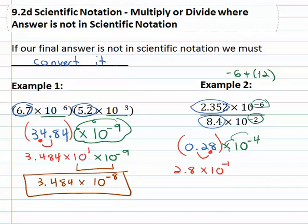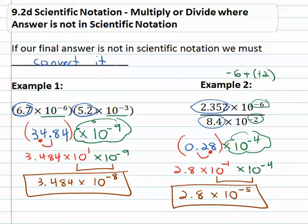And we don't forget that we also have this times ten to the negative four hanging out. So to finish it off, we'll use our exponent properties on those tens, giving us 2.8 times ten to the, adding the exponents, negative one and negative four is negative five and we have our final solution.